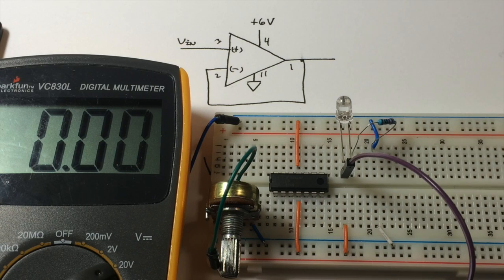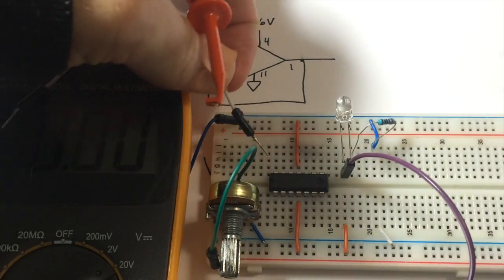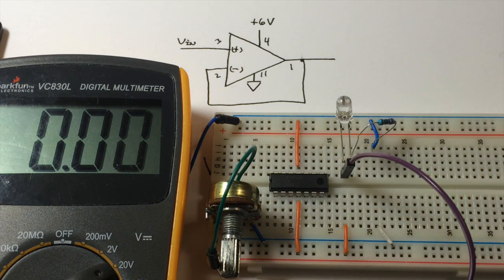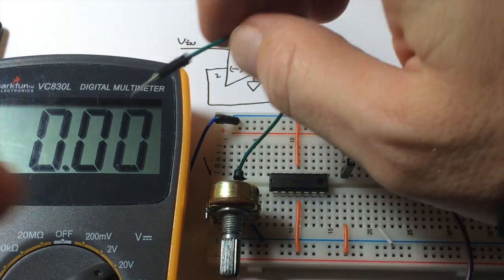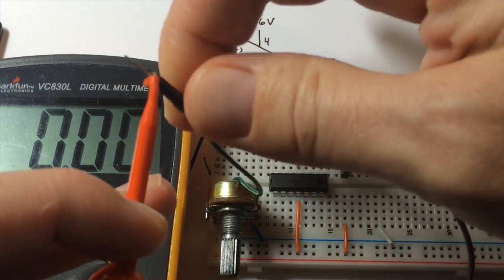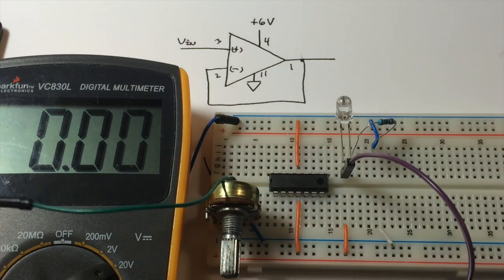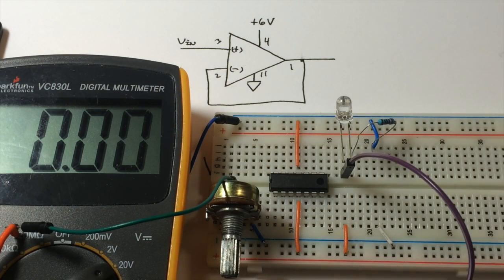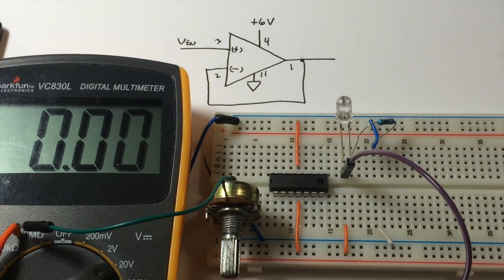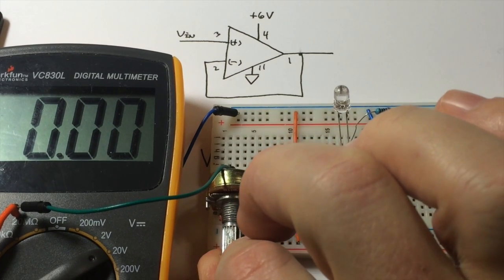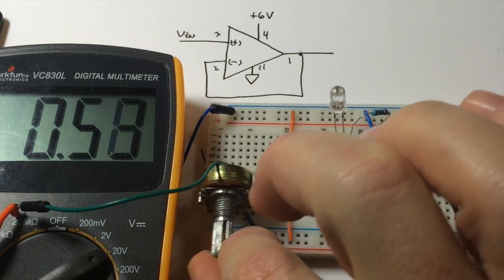I'm going to show you this circuit using the LM324 that we're always using in this class. Remember that the notch at the top is where we start counting, and we're going to use the first op-amp. Over here I have a potentiometer wired to 6 volts and to ground, and it's hooked up to my meter.